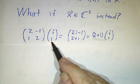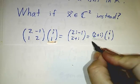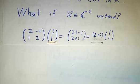In other words, (i,1) is a complex eigenvector, and that's the complex eigenvalue.